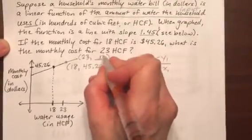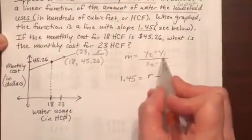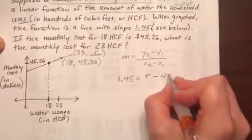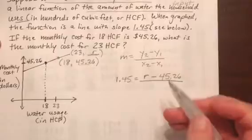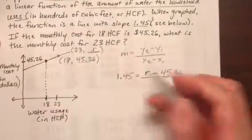We are missing our y2 value. So let's just call this r, like we did in past problems, minus our y1 value. That would be the $45.26. So we're subtracting y-values over the subtraction of x-values. So 23 minus 18.